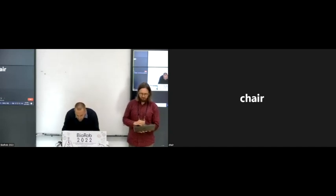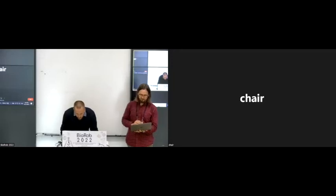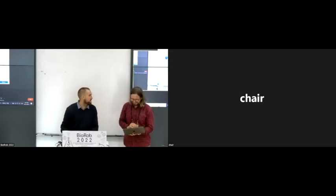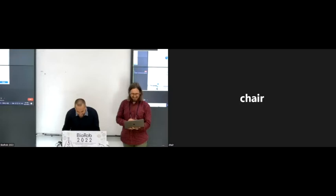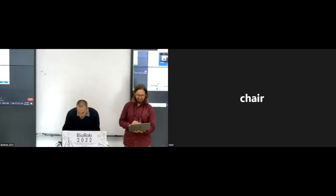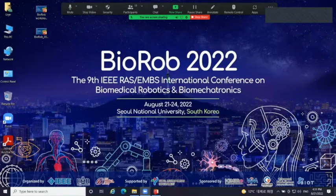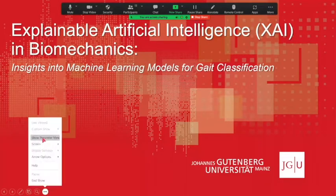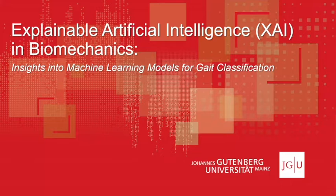Fabian is a senior researcher in the department of training and movement science at Johannes Gutenberg University Mainz. He graduated in sports engineering at the University of Magdeburg in 2012 and received his PhD degree from Johannes Gutenberg University Mainz in 2018. His research interests include the recognition of patterns in biomechanical signals of human movements using machine learning methods. Thank you, Tomislav, for the introduction and the possibility to present our work here at the workshop.